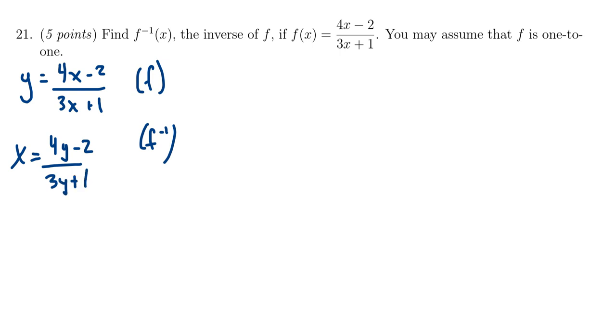We now want to solve for y, so times both sides of the equation by 3y plus 1. That way it cancels out on the right-hand side.